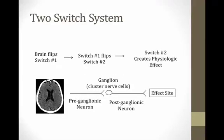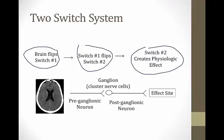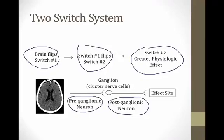When the autonomic nervous system wants to carry out an action — say, constrict a blood vessel — it uses what I call a two-switch system. The brain flips the first switch, which flips the second switch, and the second switch creates the physiologic effect. The brain sends a signal through the pre-ganglionic neuron, the first switch, which triggers the post-ganglionic neuron, the second switch, to create an effect at the site.